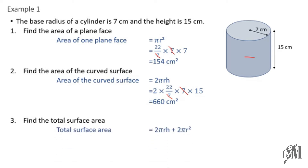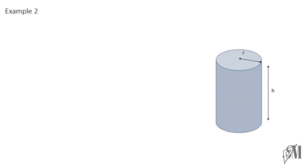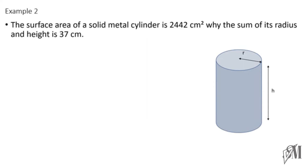To find the total surface area, we add the two surface areas found before. Note that the formula uses 2πr², but we previously found only πr² for one face, so we multiply that by 2 and add. The total surface area is 968 square centimeters.